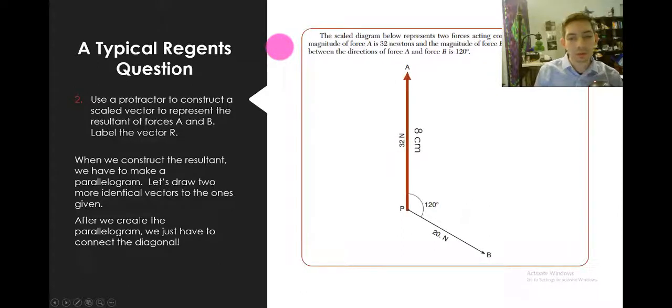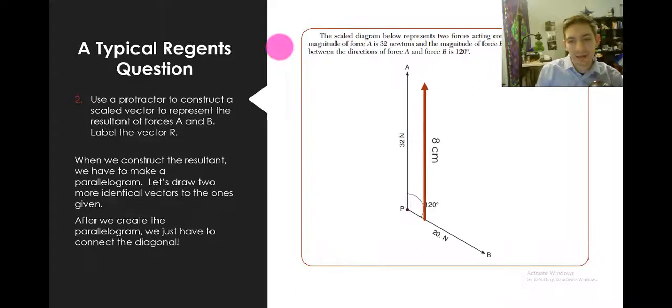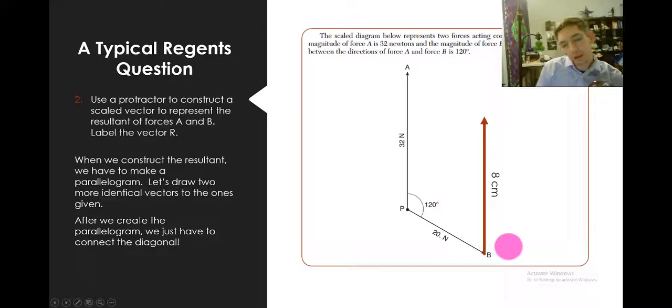So here's the 32 newtons. It's actually exactly 8 centimeters. Then we slide it over to where B is. Then we do the same thing with the 20 newton vector. We measure it. We measured it before as 5 centimeters. And we slide it up to create a parallelogram. And after we create the parallelogram, it's easy peasy.